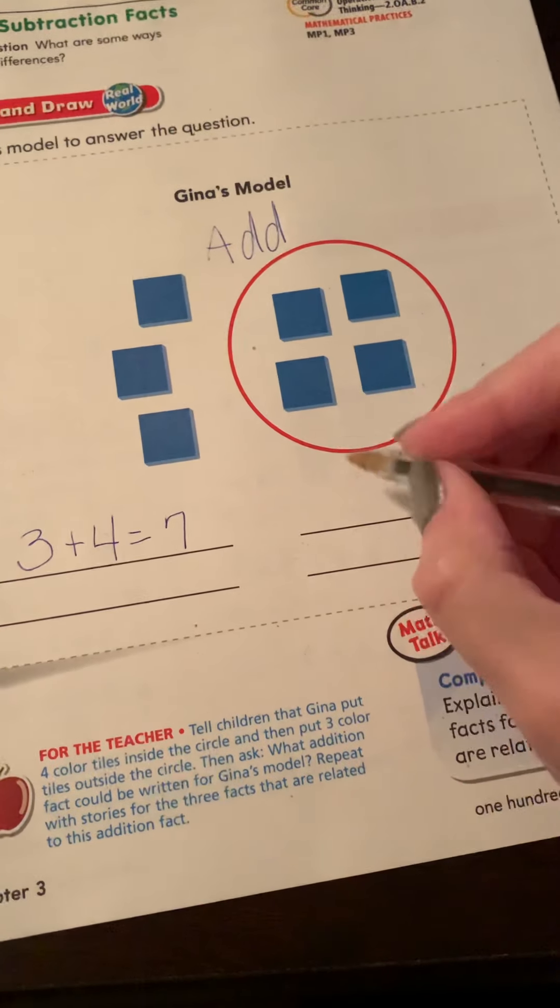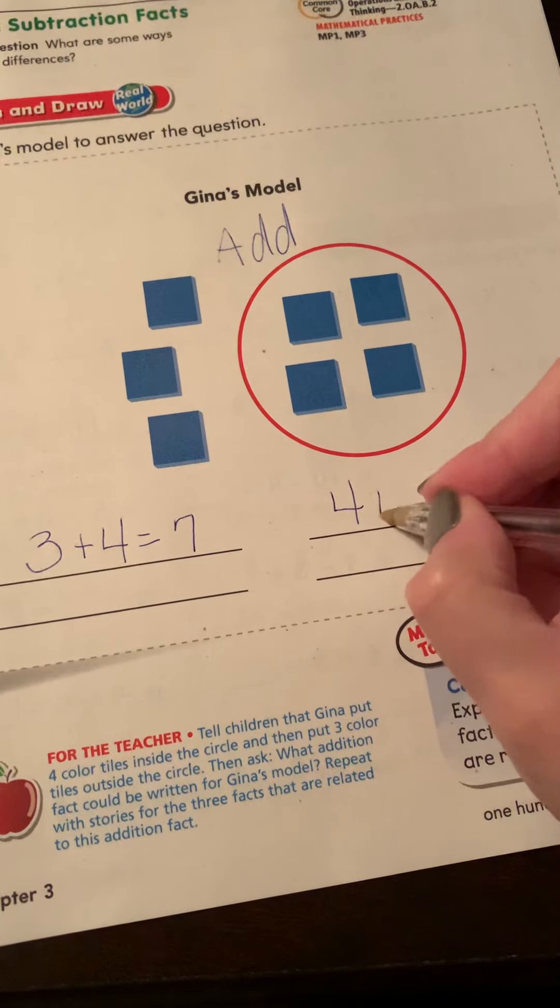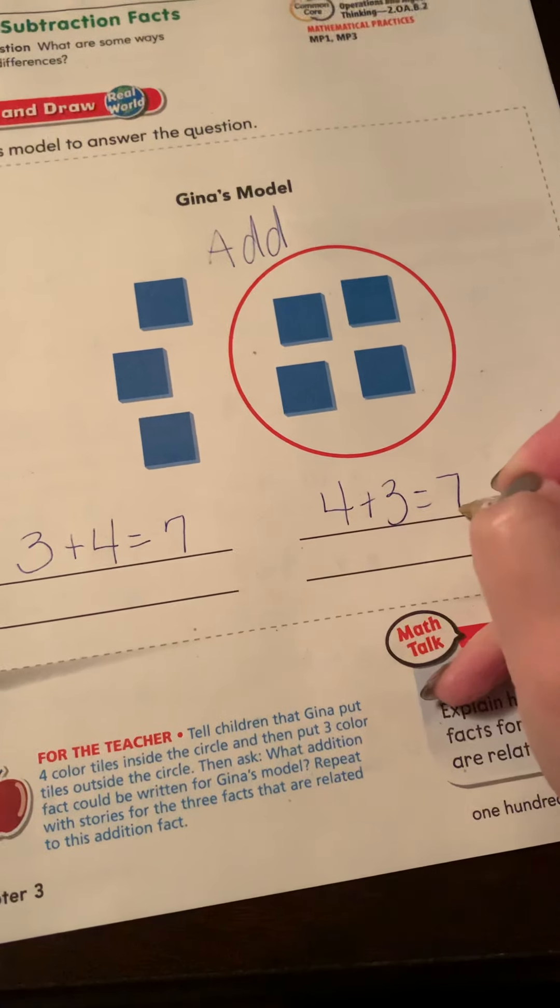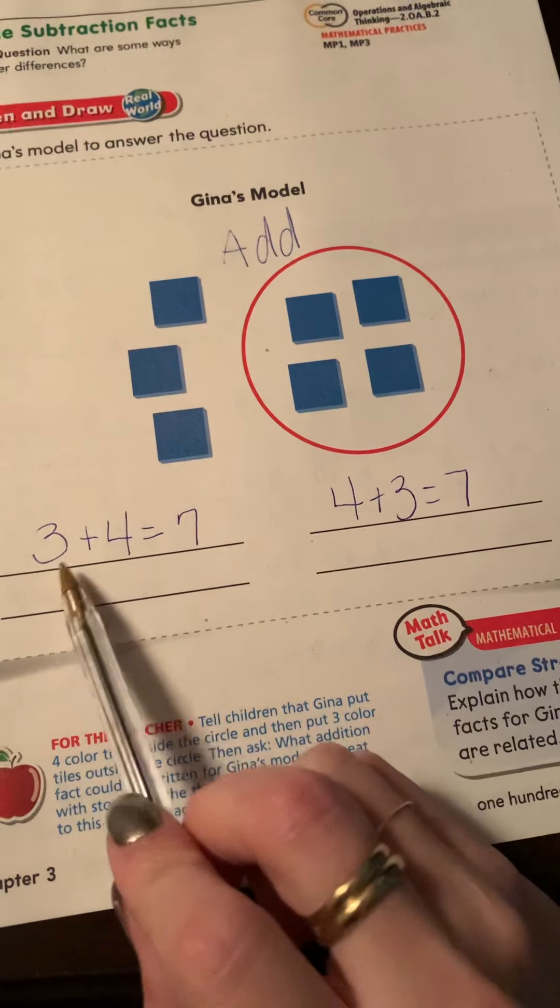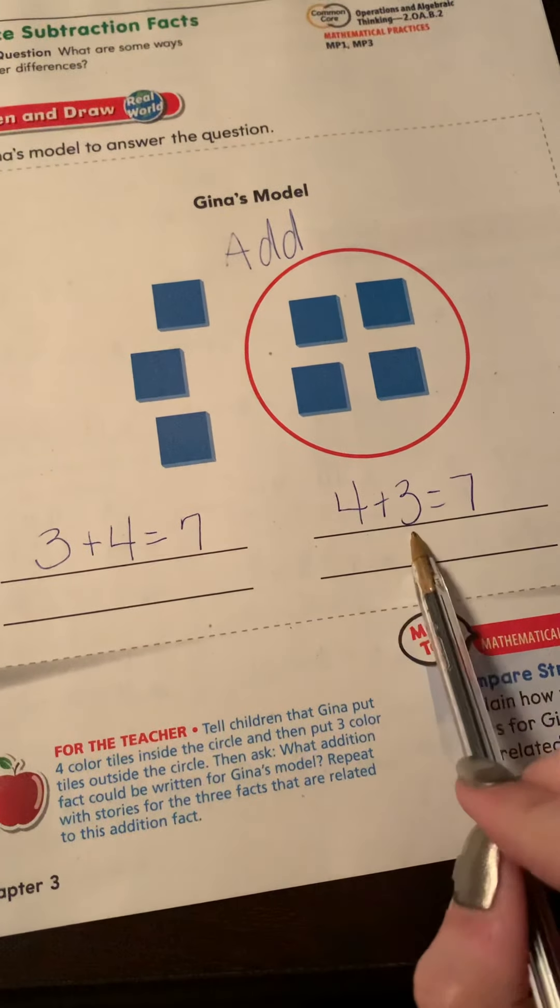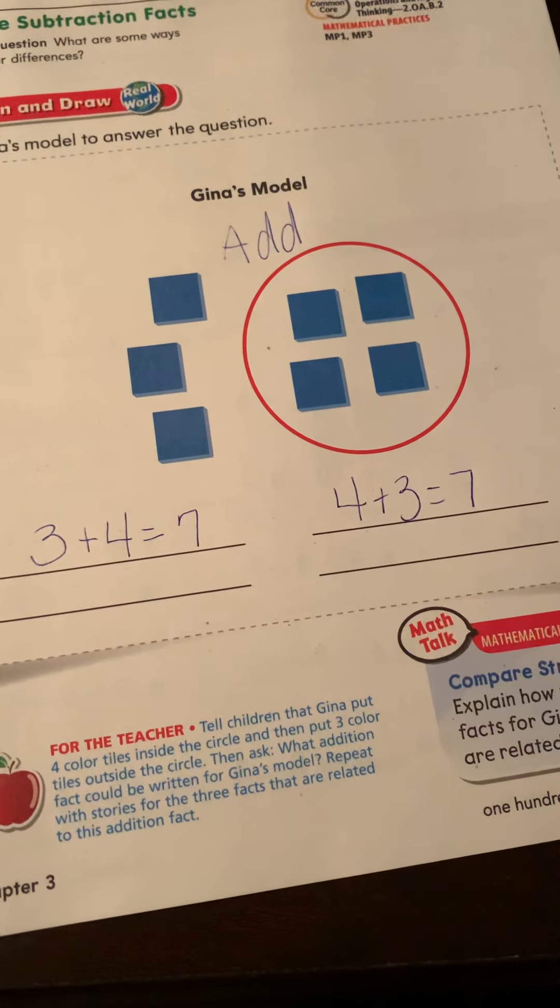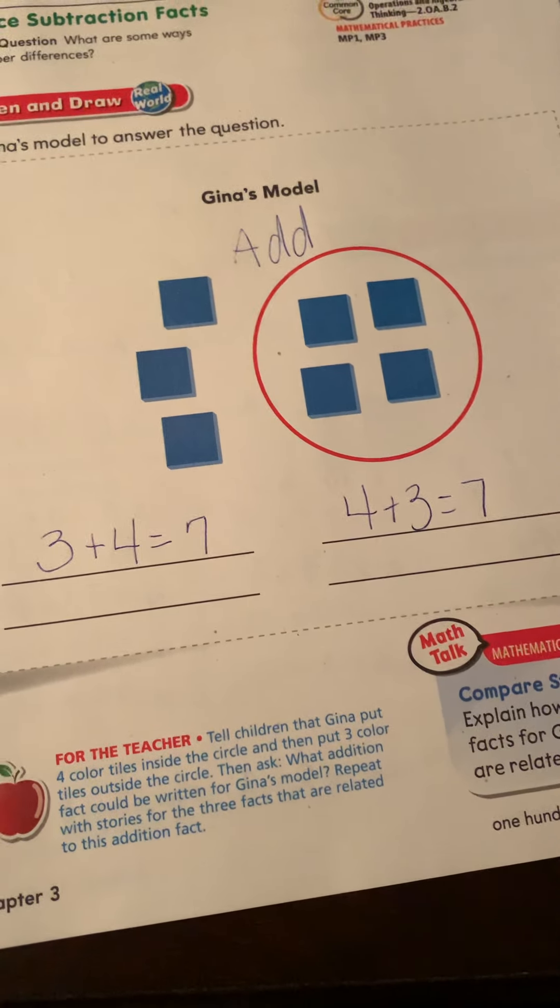We can also say that four plus three equals seven, right? Because we know when we add, we can put either number first and we're still going to get the same answer.